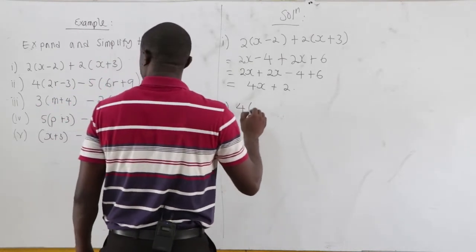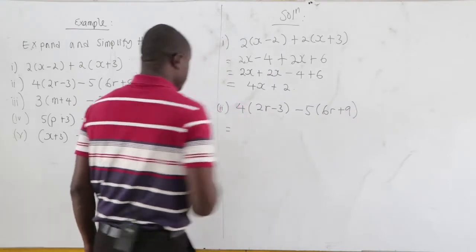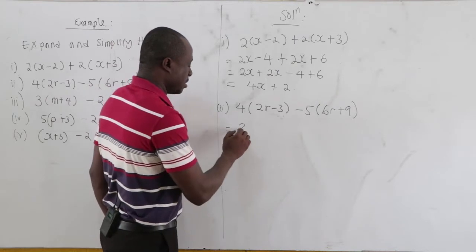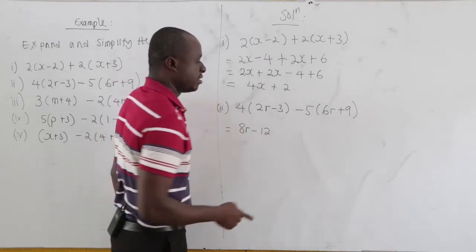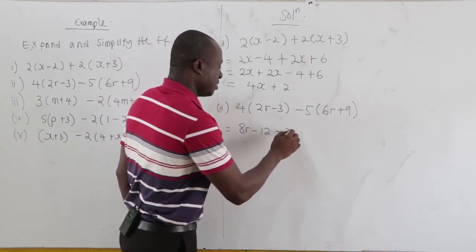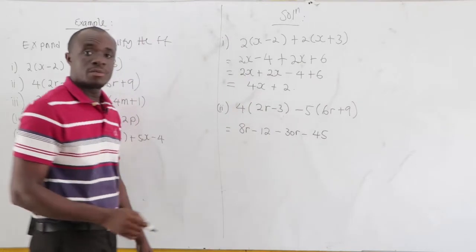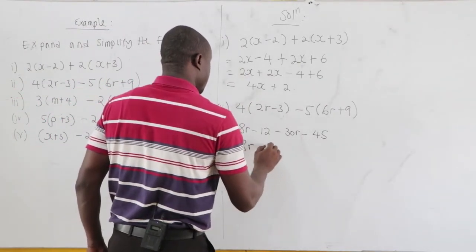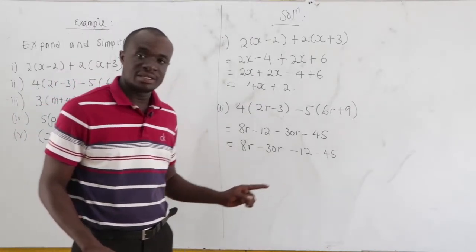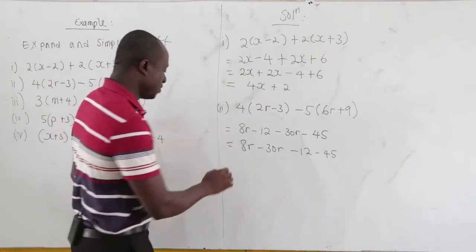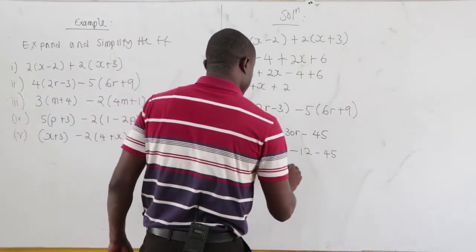Second: 4 times 2r minus 3 minus 5 times 6r plus 9. Applying distributive property: 4 times 2r equals 8r, 4 times negative 3 equals negative 12. Then negative 5 times 6r equals negative 30r, and negative 5 times 9 equals negative 45. Grouping: 8r minus 30r equals negative 22r, and negative 12 minus 45 equals negative 57.